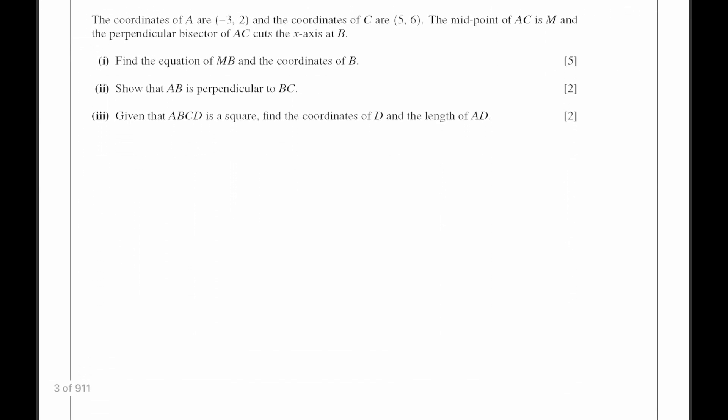Let's move on to the next question. The coordinates of A are minus 3 and 2, and the coordinates of C are 5 and 6. The midpoint of AC is M, and the perpendicular bisector of AC cuts the x-axis at B. For part 1, find the equation of MB and the coordinates of B. First we need to find the coordinate of M, the midpoint of AC.